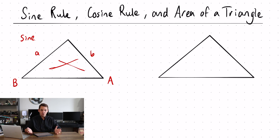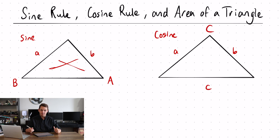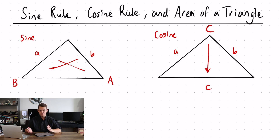For the cosine rule it's slightly different. The information that we have are three sides and an angle opposite. For the cosine rule, the only unknowns you're going to be allowed to have are the C's — either the angle itself or the side that is opposite the angle. It won't work for anything else.